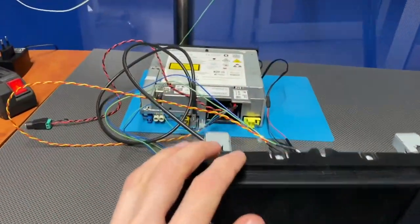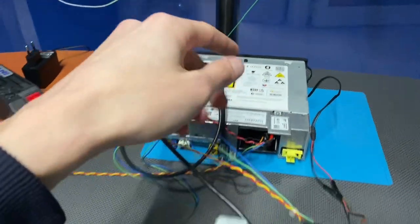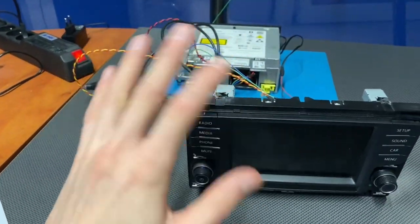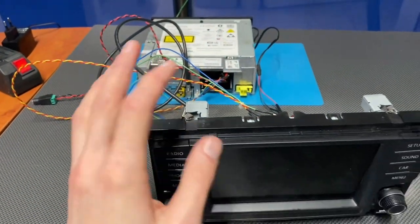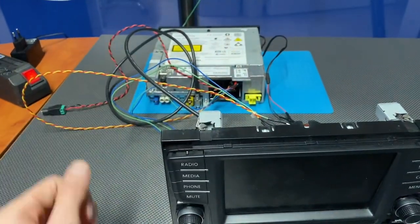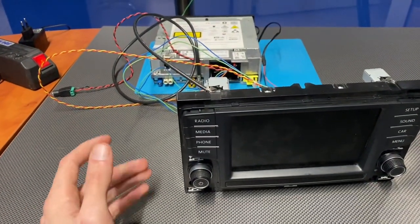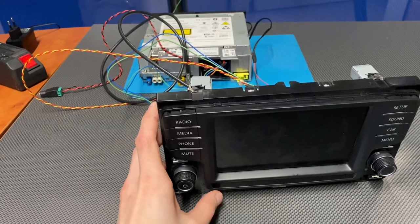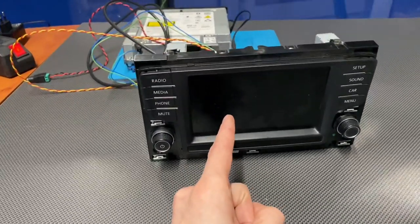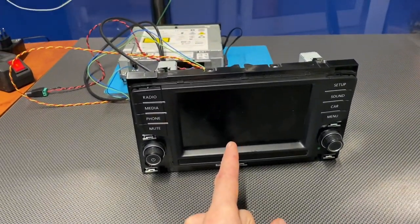But the unit is MIB1 High from Skoda. This should not be an issue because those displays and units are using the same communication protocol, so we should be fine as long as the resolution of the display is correct.